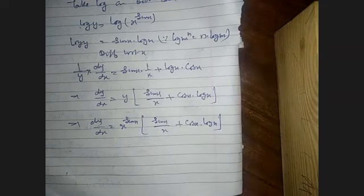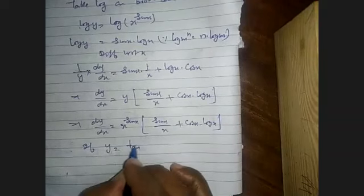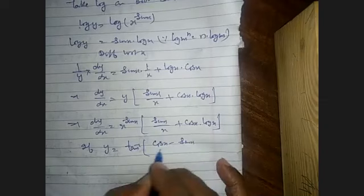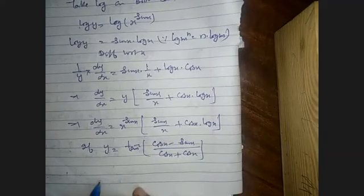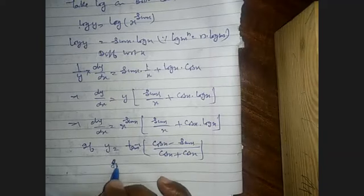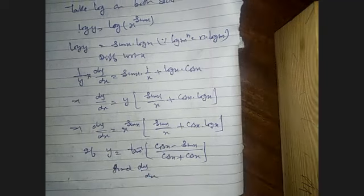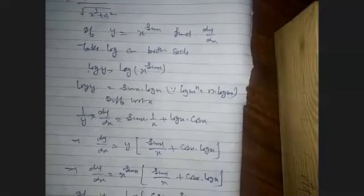Next question: if y equals tan⁻¹((cos x − sin x)/(cos x + sin x)), find dy/dx. When an inverse trig question comes, first simplify. Divide numerator and denominator by cos x.